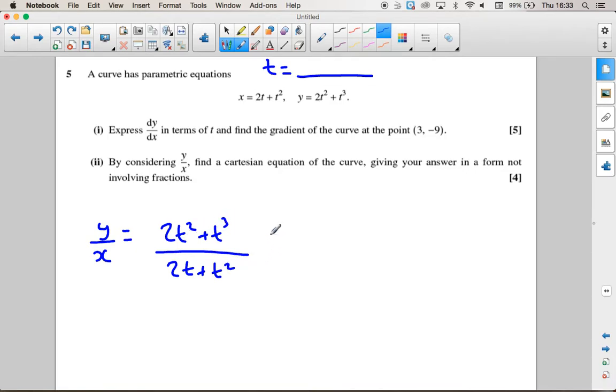Well what happens is we can factorise a load of this. We can write that, well I can take t squared out of the top one and I get 2 plus t and on the bottom I can take t out and I'll also get 2 plus t.